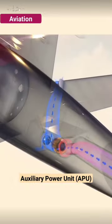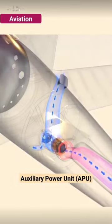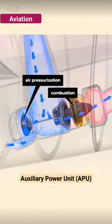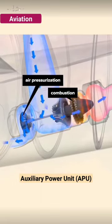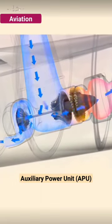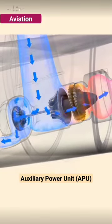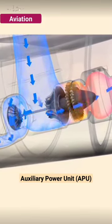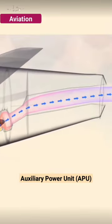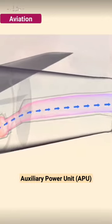Air is drawn in through a port at the rear of the plane. It's mixed with fuel and ignited, and the resulting combustion drives a turbine to pressurize more air for various purposes or run an electric generator. The APU exhausts out the back of the plane.